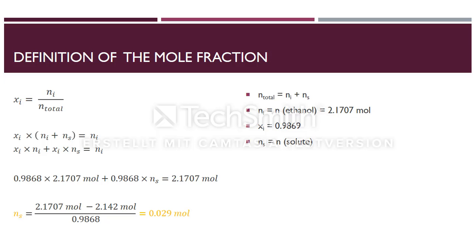For the further step we need the definition of the molar fraction, which is the number of moles of the component divided by the total number of moles of all components. In our case, the total number of moles of all components is the summation of the number of moles from ethanol and the number of moles from our solute. We just have to convert this equation so that we get the number of moles of our solute. And this is 0.029 moles.